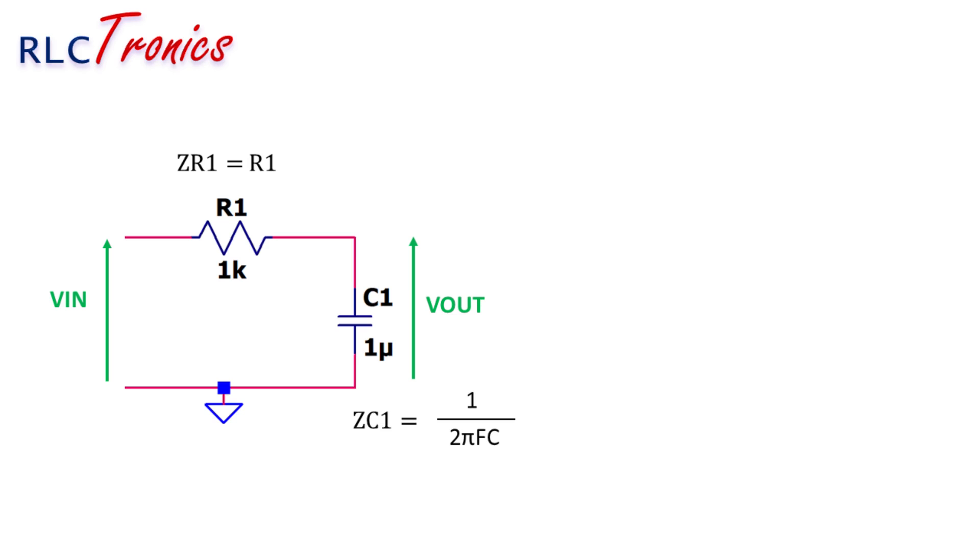Here we have two impedances: the resistor impedance and the capacitor impedance. The particularity here is that the capacitor impedance depends on the frequency as represented by this equation. The impedance of the capacitor will decrease when the frequency increases.